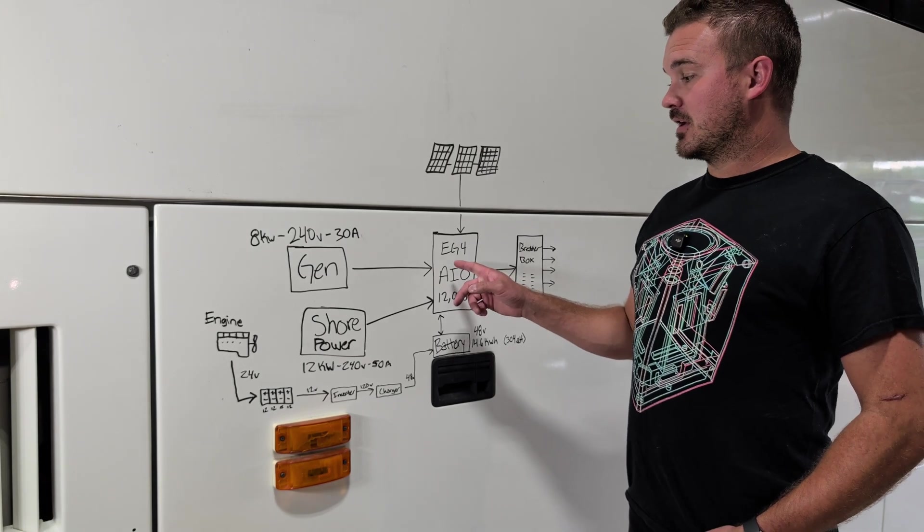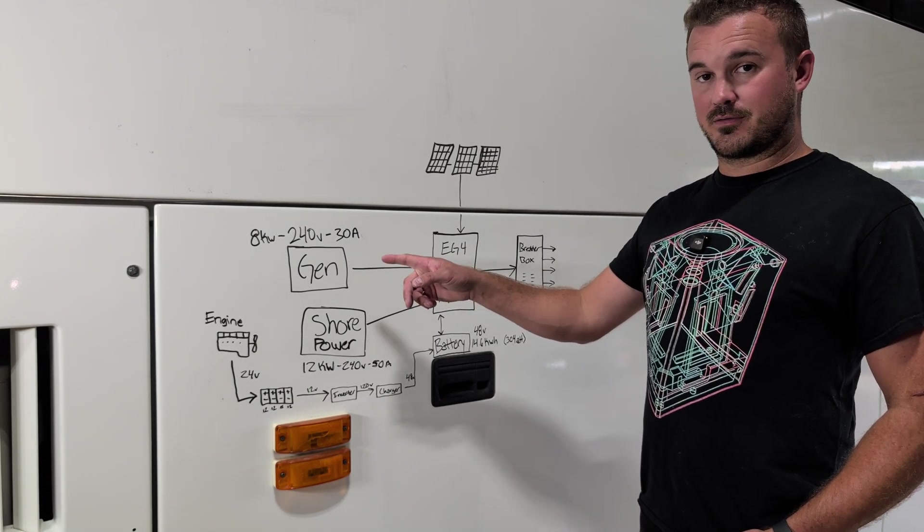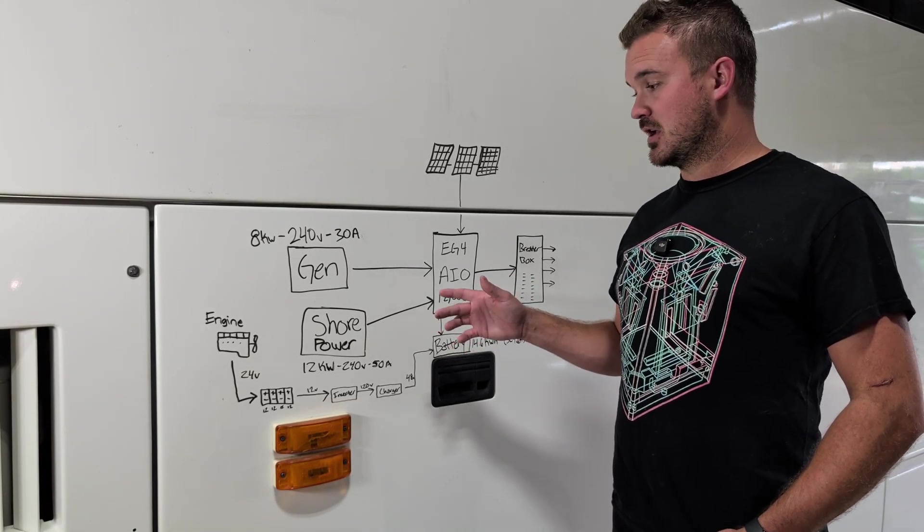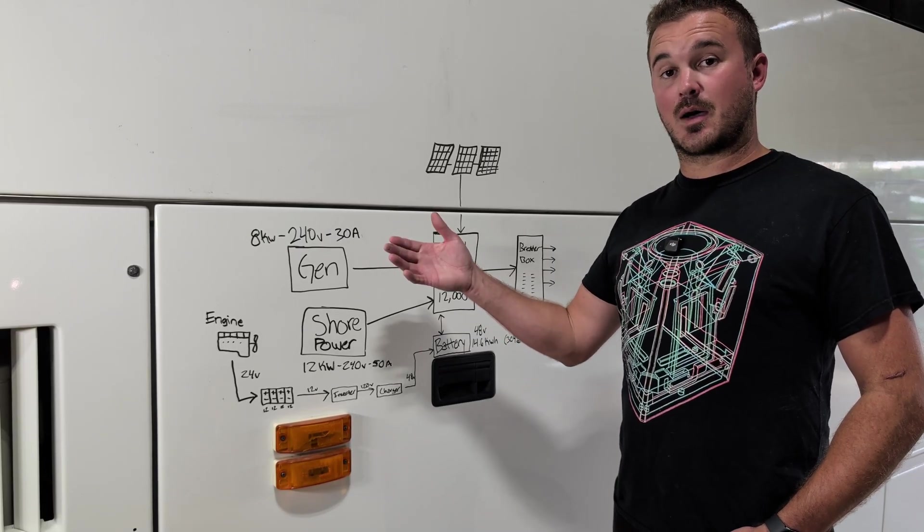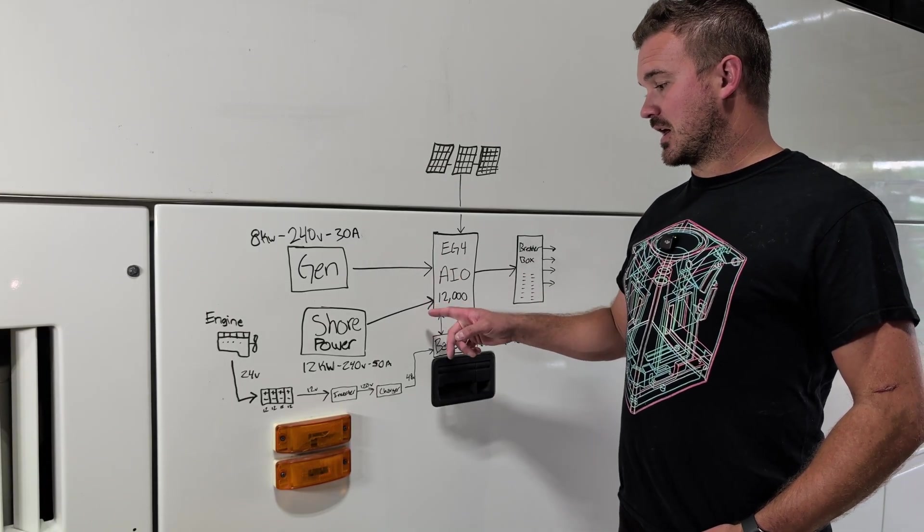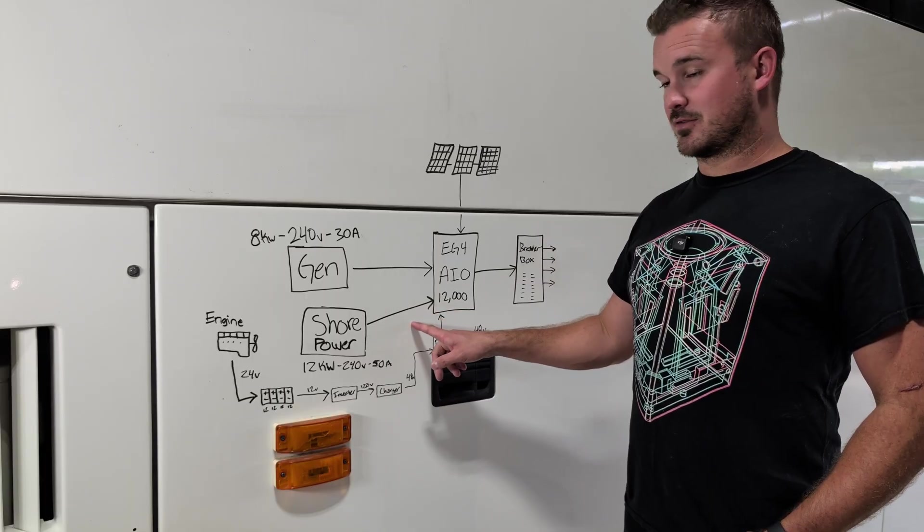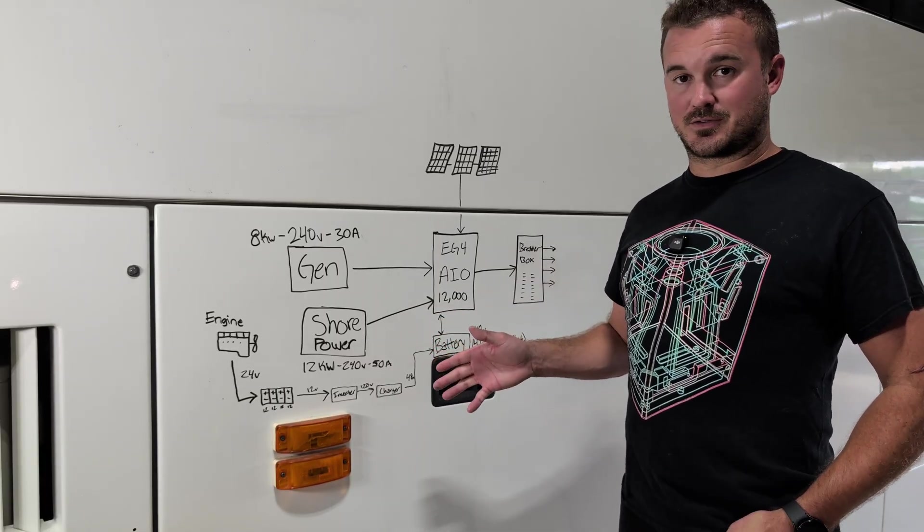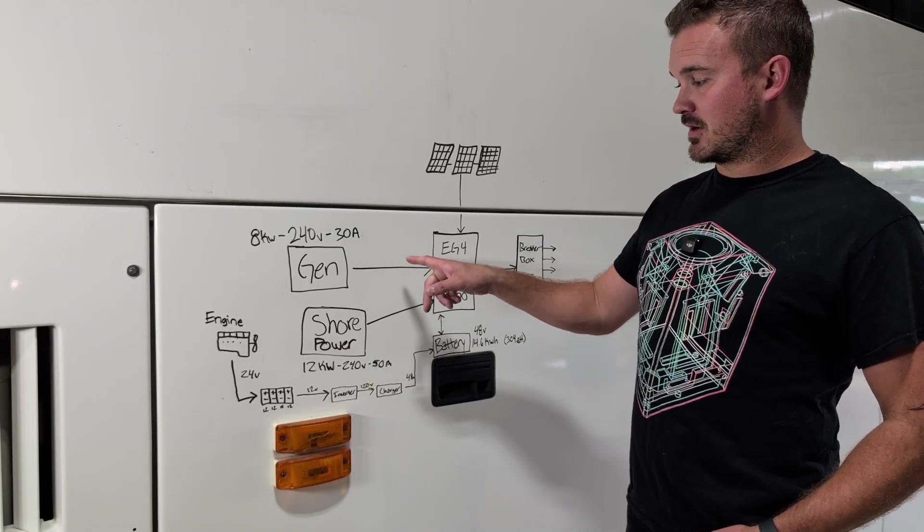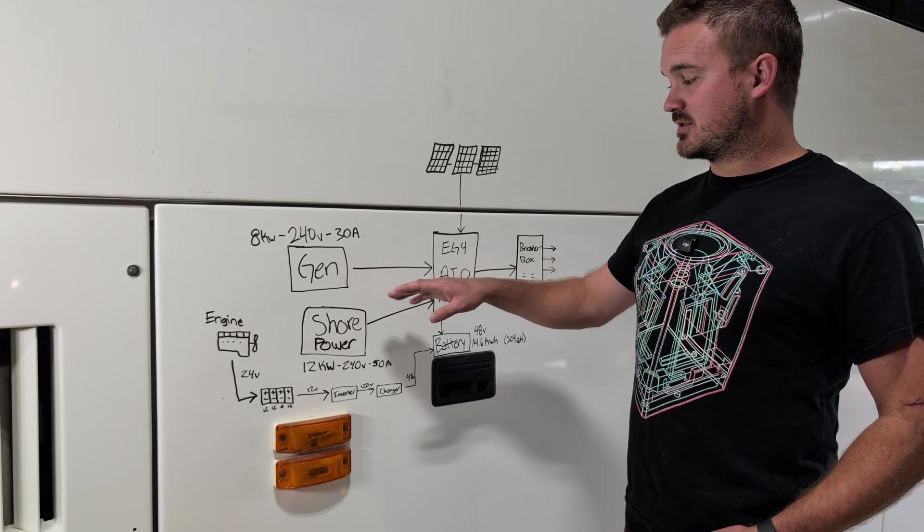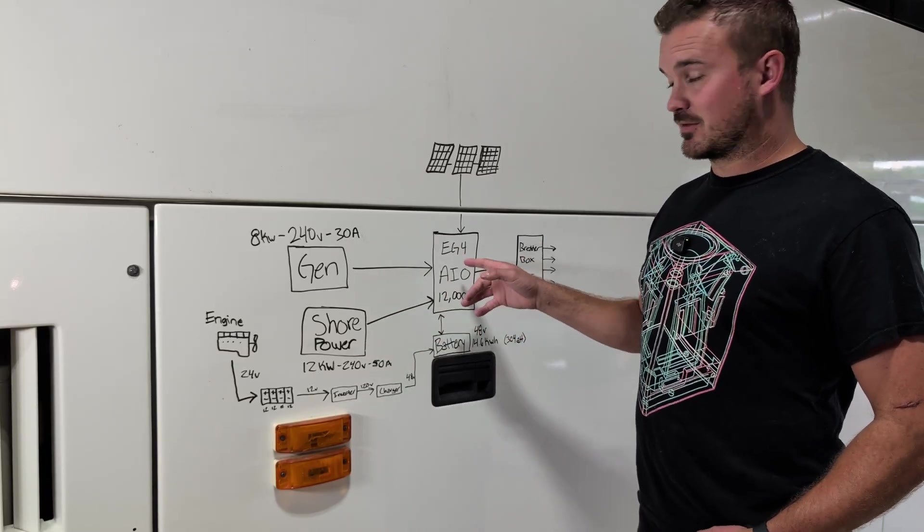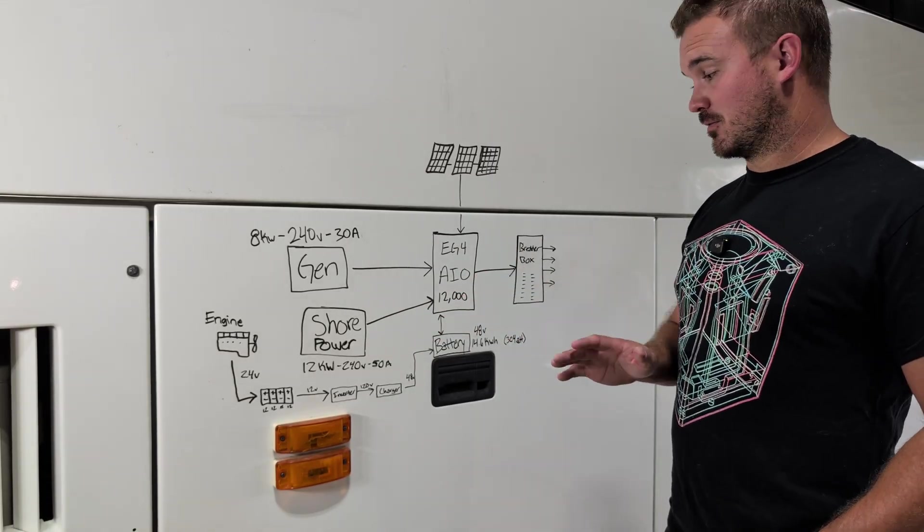It also has an auto generator start feature so that when your battery gets down below whatever percentage that you choose, it can actually automatically start and then stop the generator if your generator supports that. So that was a really neat thing. And I just really liked that it had separate inputs for the generator and the shore power, meaning that I didn't need a transfer switch. So on our previous fifth wheel, I needed to have another thing called a transfer switch that basically would tell the inverter where to get power from either generator or shore power if it was available. But this has multiple inputs and it figures it all out, which is phenomenal.